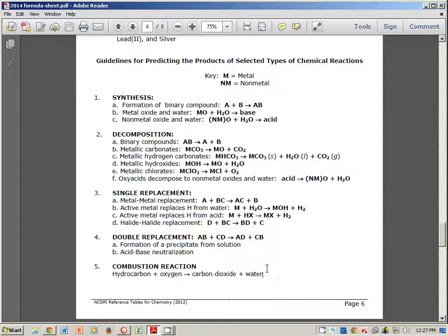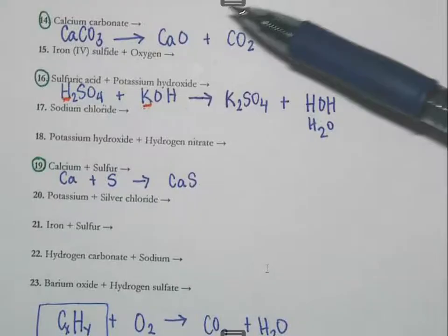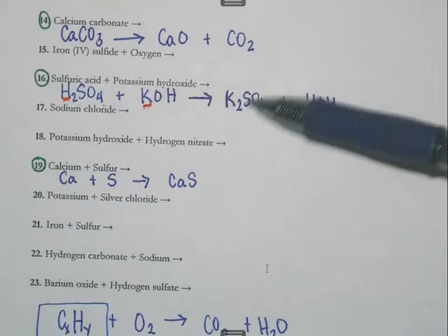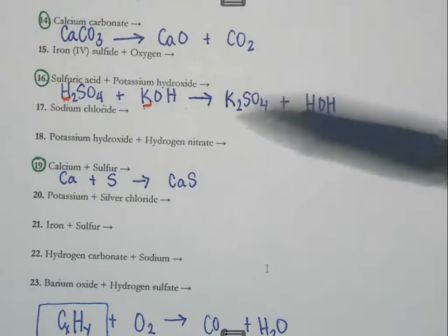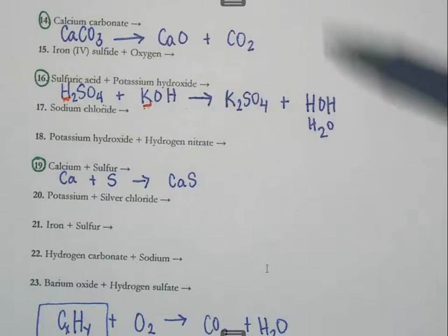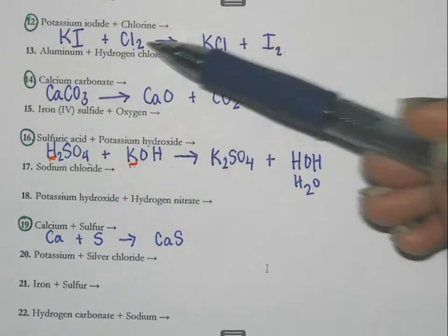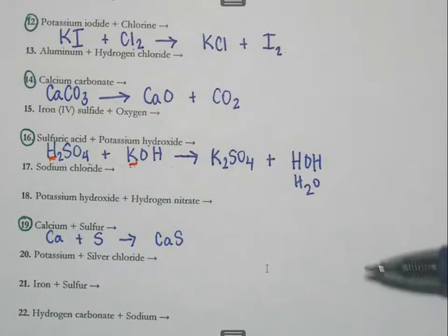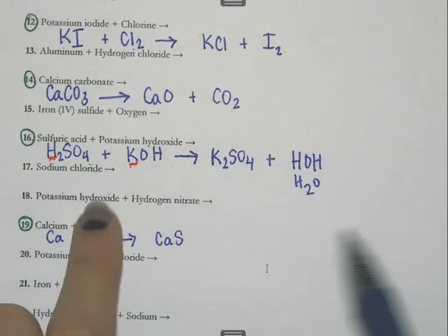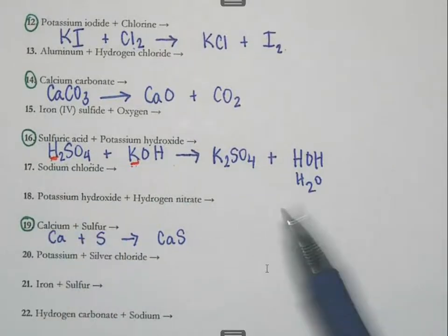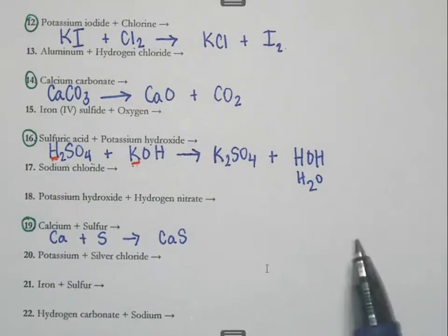If you had trouble with any of these, the most common mistakes are not writing formulas correctly — many students forget about the charges — and forgetting the diatomic elements, which really throws off balancing later. If you have questions, go back to the other videos on how to write formulas or how to balance equations.